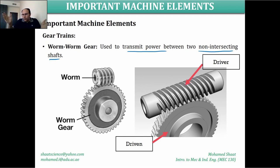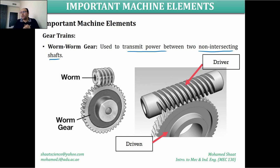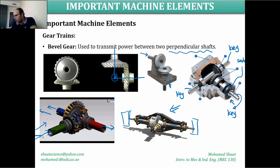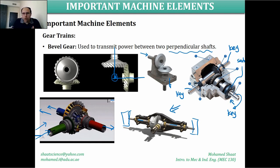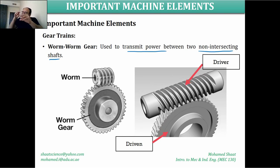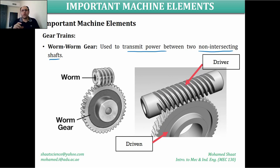The worm by itself has no function and neither does the worm gear by itself — they must work together. Unlike bevel gears, where you could swap a gear and use it elsewhere, for this mechanism you must use this worm with its specific worm gear. For every worm, there is a gear specially designed for it, so both work together like a single system.